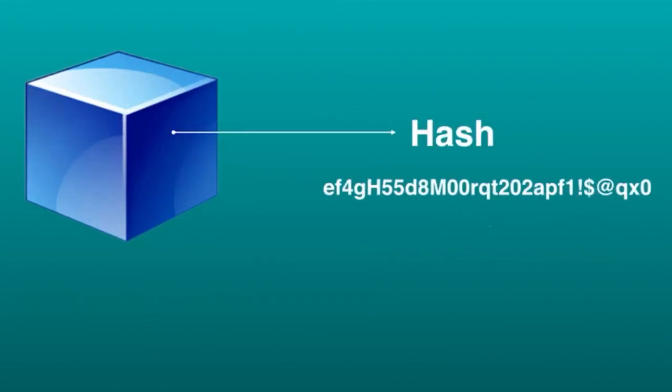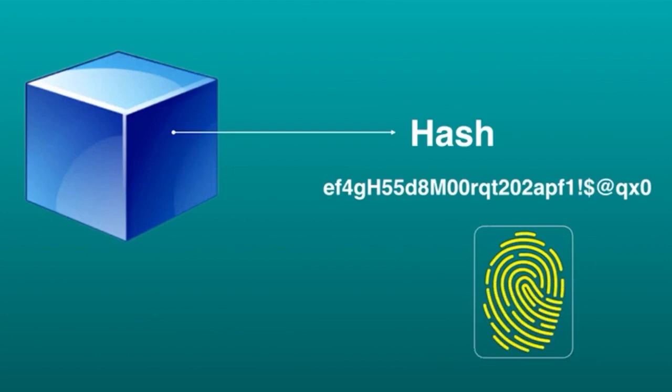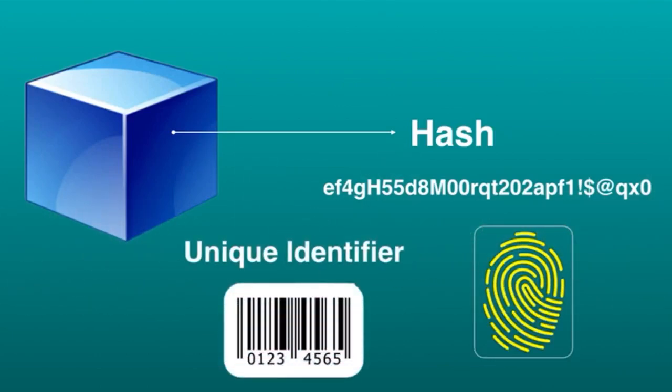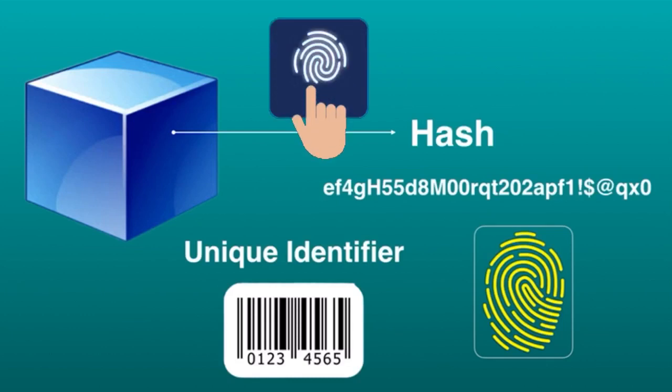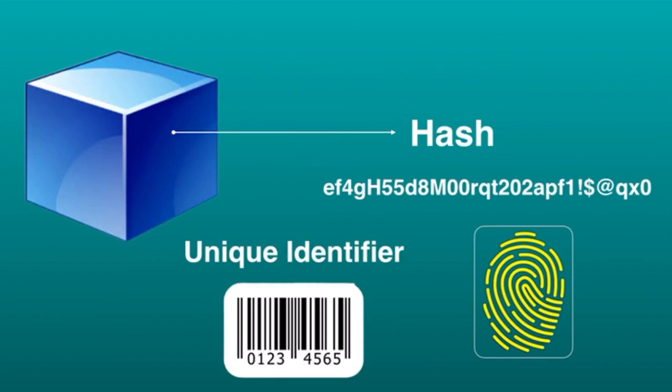A hash can be compared to a fingerprint or a unique identifier that identifies the block and its content. Hash is always unique and different, just like a digital fingerprint. Once a block is created in the blockchain, its hash is calculated automatically. If you change data inside the block, it also changes the hash of the block.